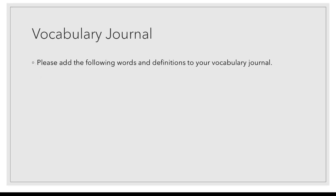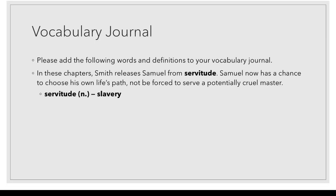Let's get those vocab journals out — we're going to add two words. The first word we have for today is servitude. In the chapters we just read, Captain Smith releases Samuel from servitude, which basically means slavery. He works for Captain Smith but doesn't get paid and doesn't have a choice on whether or not he can quit. Samuel now has a chance to choose his own life's path and not be forced to serve a potentially crueler master than Captain Smith.